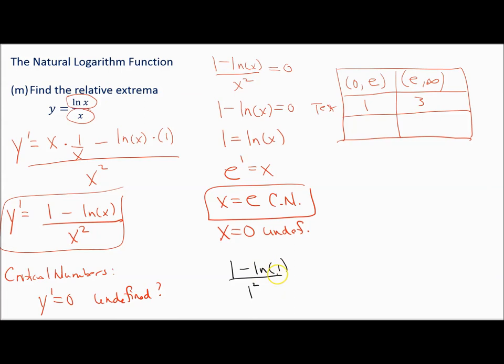We're just trying to determine if the derivative is positive or negative. Plugging in 1: the natural log of 1 is zero, giving 1 over 1 squared, which is 1 — positive. Plugging in 3: 1 minus natural log of 3 over 9. The numerator gives approximately negative 0.0986, so the result is negative.